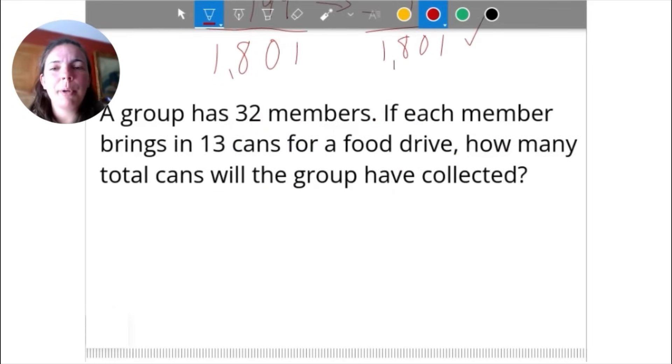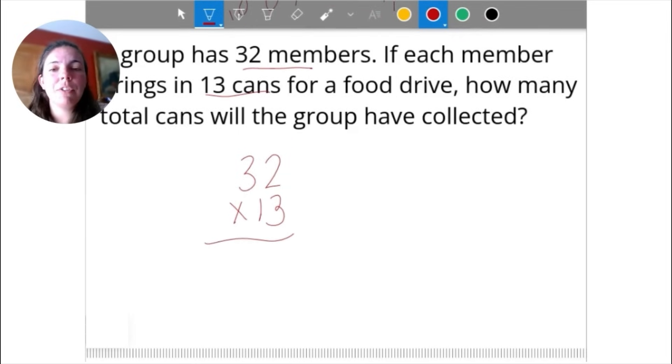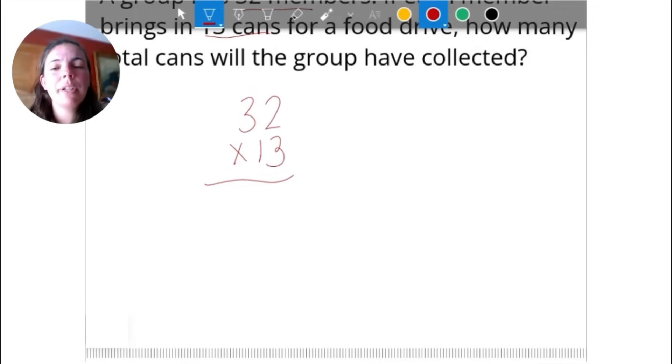Let's just look at a quick word problem. A group has 32 members. If each member brings in 13 cans for a food drive, how many cans will the group have collected? If we have 32 members and each member brings in 13 cans, we're going to have to multiply these. If you have a calculator, just go ahead and plug that in. The key part here is knowing that we need to do multiplication. We're going to start in the ones place. 2 times 3 is 6, then move over to this 3. 3 times 3 is 9. Done with the 3, move over to the 1 in the tens place, so I need a placeholder. 1 times 2 is 2, 1 times 3 is 3. Now I can add these together and we get 416 total.